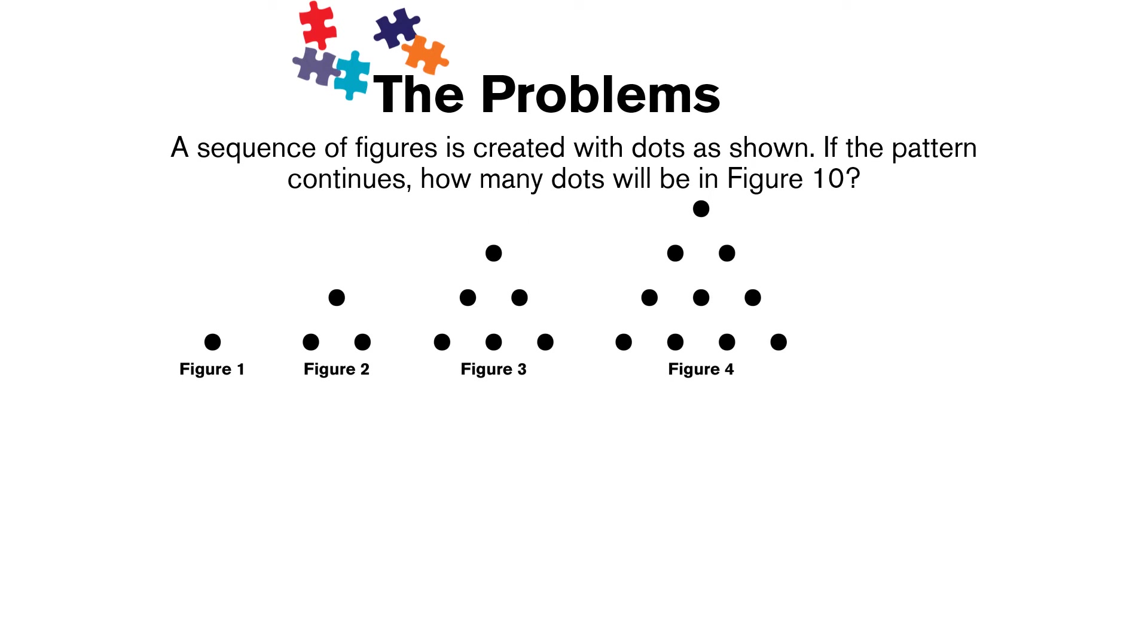All right, so the first problem we're going to look at says a sequence of figures is created with dots as shown. If the pattern continues, how many dots will be in figure 10?